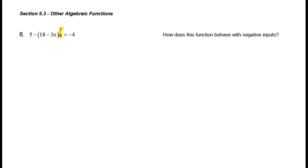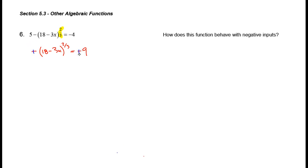So let's go ahead and just use some algebra and see what happens. We're going to start by subtracting 5 from both sides, so that's going to give me the opposite of the quantity 18 minus 3x, all raised to the 2/3 power. If I subtract 5 from negative 4, that gives me negative 9. Then I can divide both sides by negative 1 to get rid of those negative signs, and I have the quantity 18 minus 3x raised to the 2/3 power.